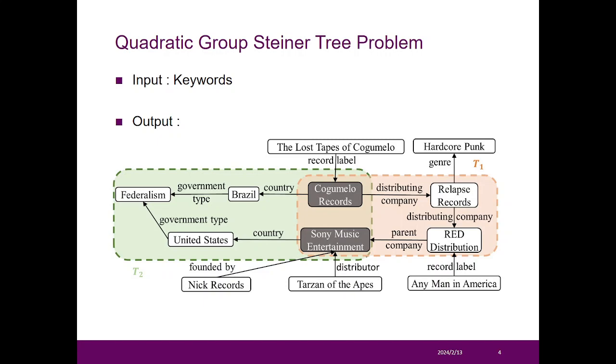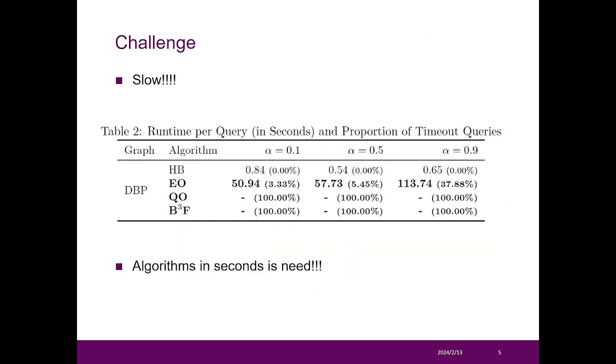Compared with other formulations, the quadratic group Steiner tree problem makes the results more symmetrically cohesive. As we mentioned, the existing algorithms are too slow, as shown in the table.